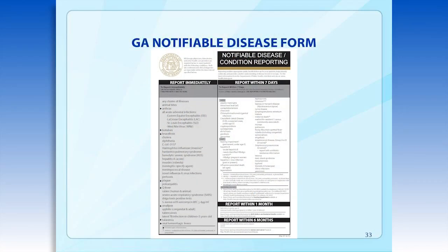This is the Georgia Notifiable Disease Form. Most of these conditions are infectious — diseases that are passed from person to person or from animal or insect to people. Georgia has four different reporting time frames: immediately, seven days, one month, and six months.